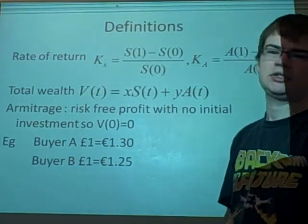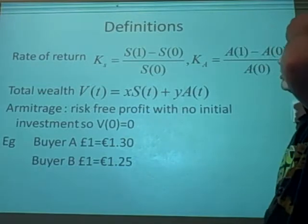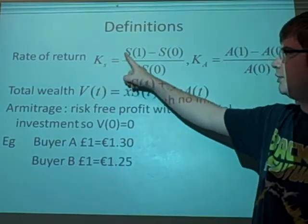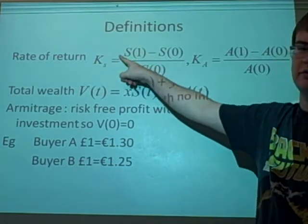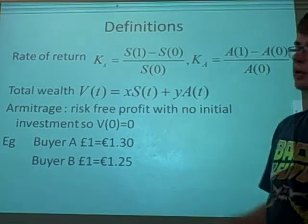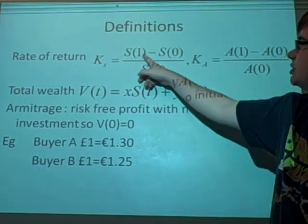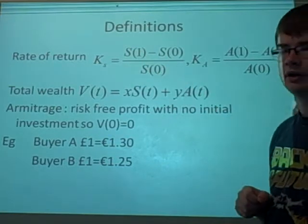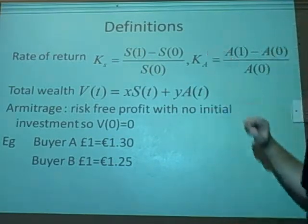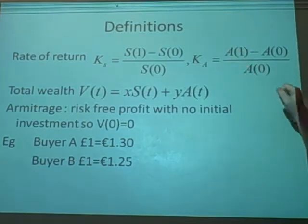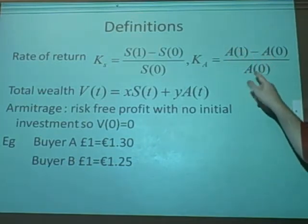The rate of return is how much you're making from your stocks. We denote this as KS, and we have the final price of the stock minus the initial over the initial. These change—if you were to have another set, you'd have 2, 1, 1 there. We have exactly the same for the bonds: the final price of the bonds minus the initial divided by the initial.